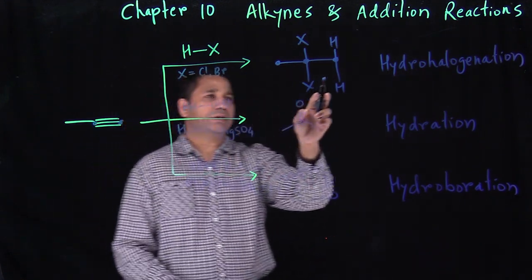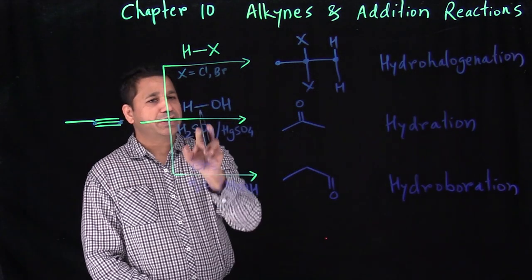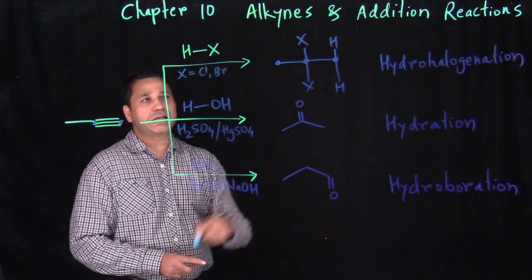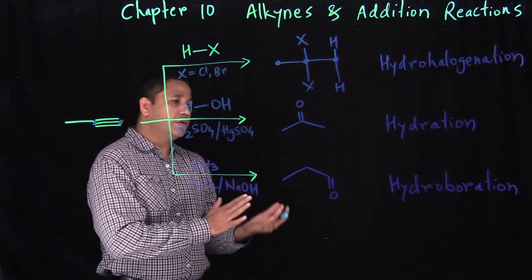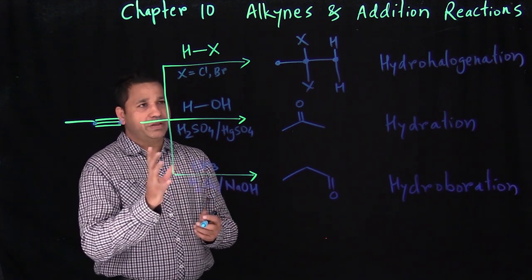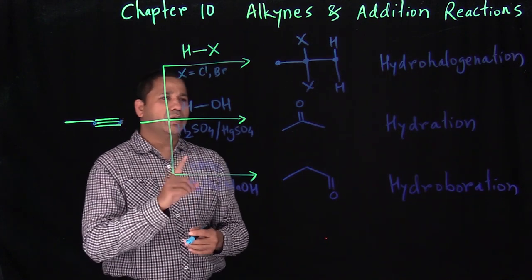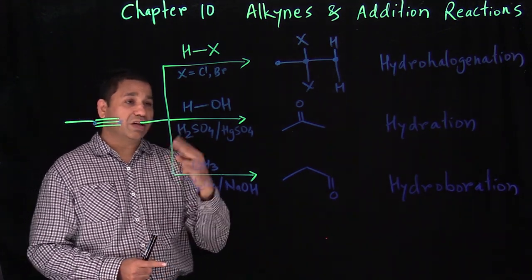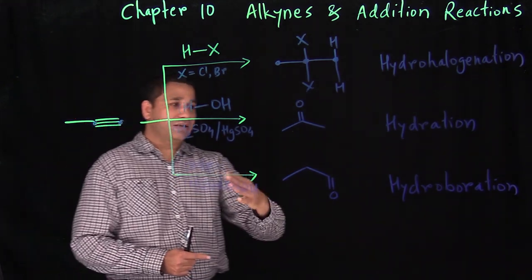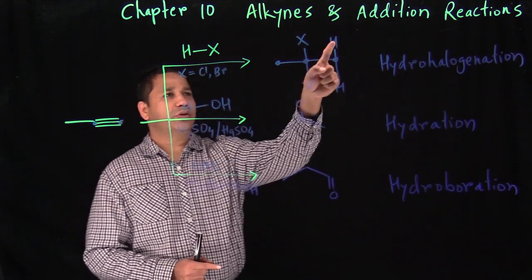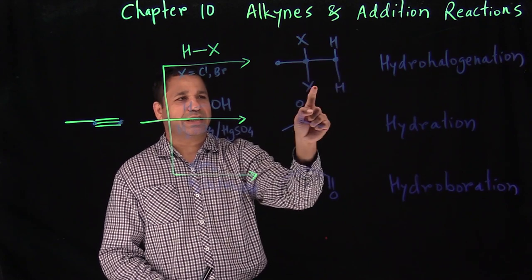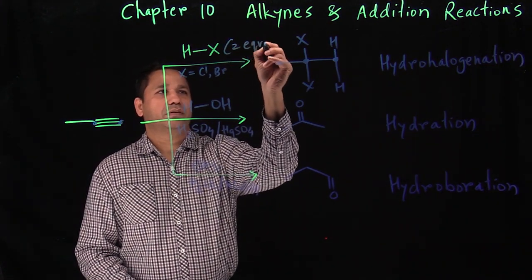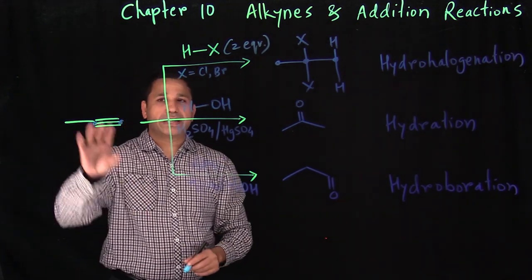Since a triple bond is essentially two double bonds — two alkenes — we do the same reactions as with alkenes but twice. For hydrohalogenation, we add HX twice. Since we're doing addition two times, we need two equivalents of HX. We'll break down each reaction in detail.